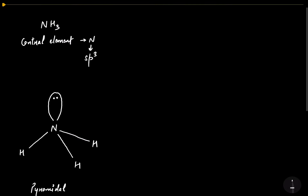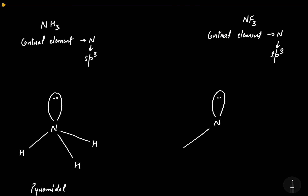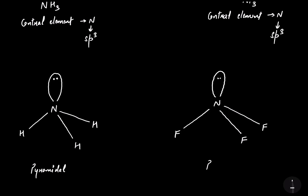Now let's talk about NF3. Here again the central element is nitrogen which is sp3 hybridized. So in this case again we are going to have one lone pair in a tetrahedral geometry, with three bonds to three fluorine atoms. This structure is also called pyramidal.